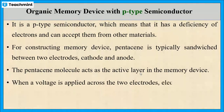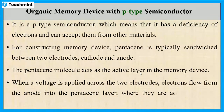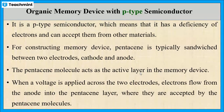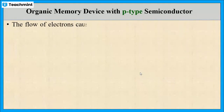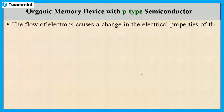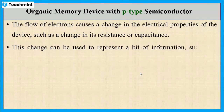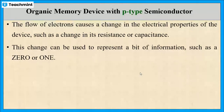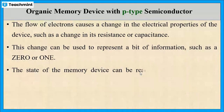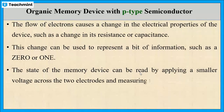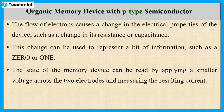When a voltage is applied across the two electrodes, electron flow will take place from anode to the pentacene layer. The flow of electrons causes a change in electrical properties, such as resistance or capacitance. This change can be used to represent a binary digit of information, such as 0 or 1. The state of the memory device can be read by applying a smaller voltage across the two electrodes and measuring the resulting current.